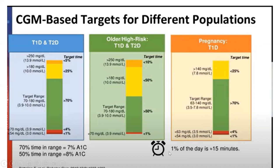One percent of the day is approximately equal to 15 minutes. Level 1 hypoglycemia (below 70 mg/dL) should be less than 4% — that's about 1 hour — and Level 2 (below 54 mg/dL) should be less than 1%, approximately 15 minutes. For older, high-risk Type 1 and Type 2 diabetic patients, targets are more relaxed: time in range should be more than 50%, above 180 should be less than 50%, above 250 less than 10%, and below 70 less than 1%.